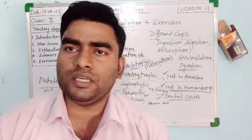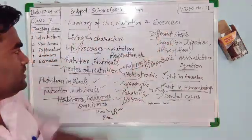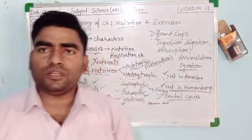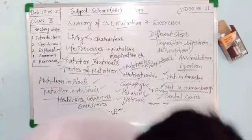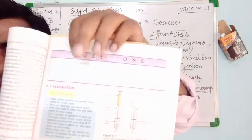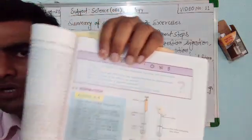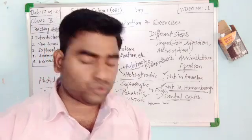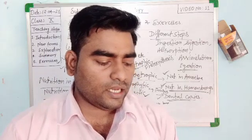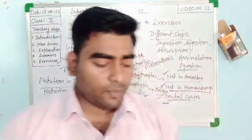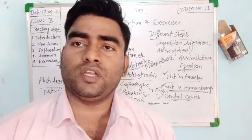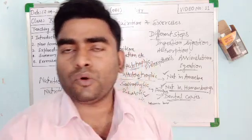Now I want to discuss the exercises from the NCERT book, page number 101. There are some questions given there. The first question is: What are the differences between autotrophic nutrition and heterotrophic nutrition? In autotrophic nutrition, organisms prepare their own food through photosynthesis — green plants are an example.